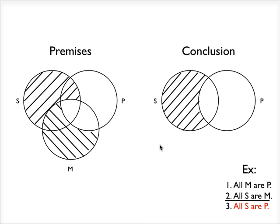So now we've mapped the premises, the two premises, and the conclusion of this syllogism. Now the question is, how can we use this diagram to tell whether or not the argument's valid?